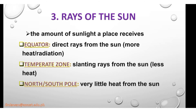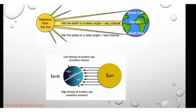Third is the rays of the sun — the amount of sunlight a place receives. At the equatorial zone, near the equator, there are direct rays of sunlight, resulting in more heat and more radiation. In the temperate zone, the rays of the sun are slanting, so there is less heat. At the north and south poles, they receive lower temperature rays of the sun, resulting in lower radiation.